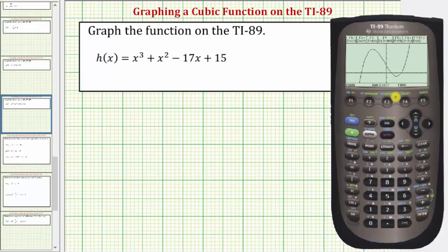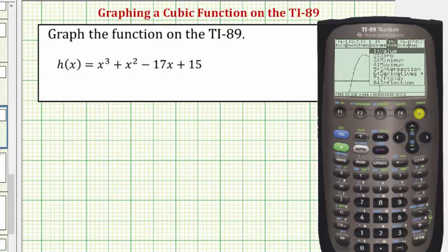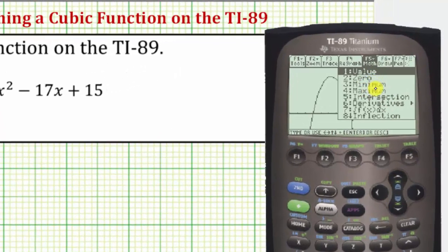If we were to graph this function by hand, we would want to find the intercepts as well as the relative maximum and relative minimum. So let's also find these on the graphing calculator. Let's begin by determining the relative maximum and relative minimum. We'll press F5 for the math menu.